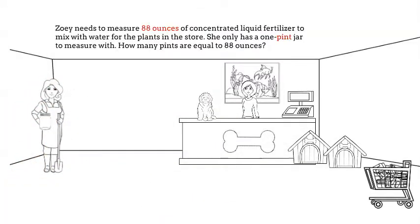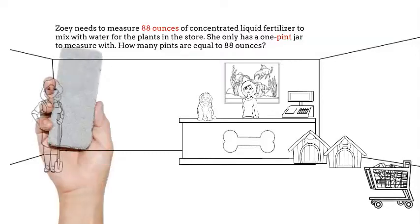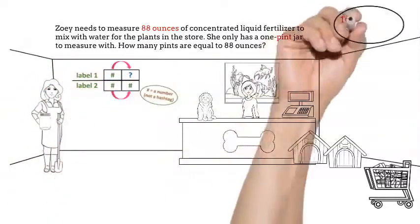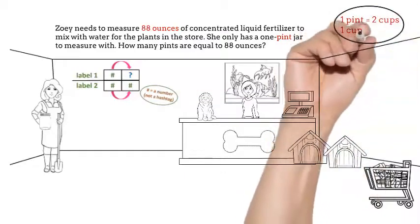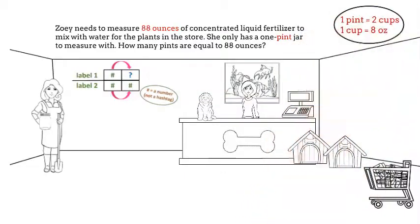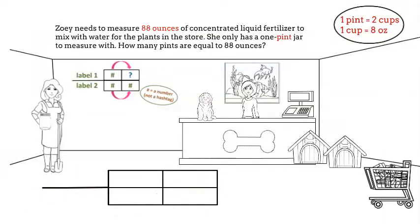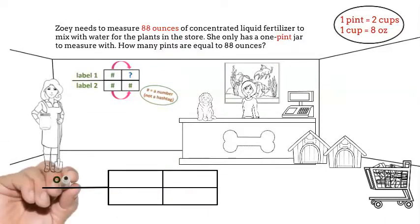Do you want to help me with another measurement conversion? I need to measure 88 ounces of concentrated liquid fertilizer to mix with water for the plants in the store. I only have a one pint jar to measure with. How many pints are equal to 88 ounces? We'll use our graphic organizer, and you need to remember that 1 pint is 2 cups and 1 cup is 8 ounces. Since 2 times 8 is 16, that means 1 pint is 16 ounces.